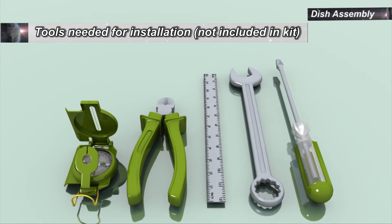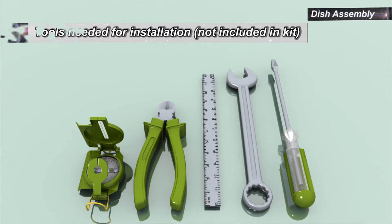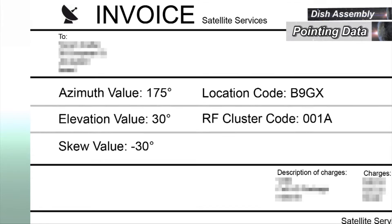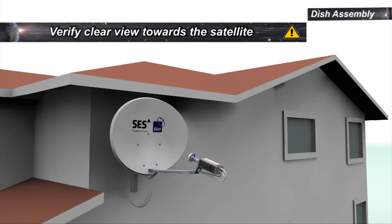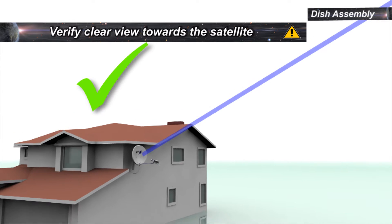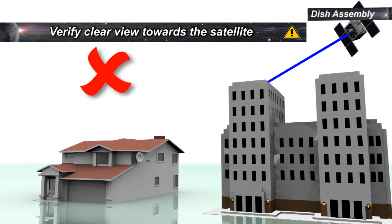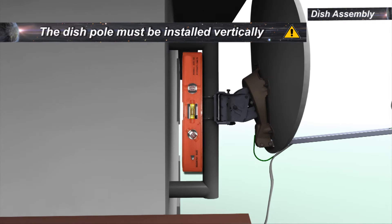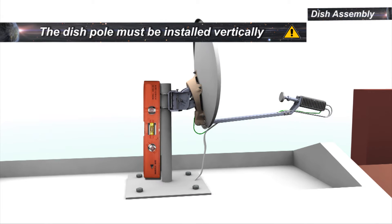Content of the kit and the list of tools required for the installation are specified in the manual. Verify that you have the pointing data and installation parameters, location code and RF cluster code from the invoice. Selecting a suitable outdoor location with a clear view towards the satellite is very important. Obstructions like buildings or trees may affect the signal strength. The dish pole must be installed vertically. Use a spirit level to verify. Please refer to the manual for information about mechanical forces on the pole.